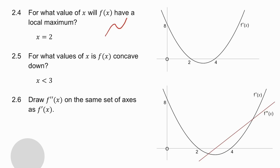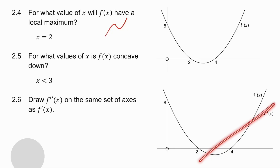The last question asks you to draw the second derivative on the same set of axes as the derivative. At a turning point the gradient is zero, so when I draw the second derivative I get an x-intercept at that point. My derivative is a parabola whose arms go up, so the second derivative is going to be a straight line with a positive gradient.